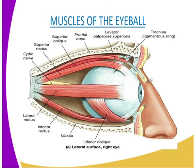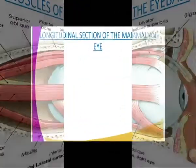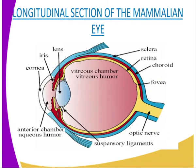The mammalian eye is a spherical fluid-filled structure whose wall consists of three distinct layers. The outer layer is known as the sclera. The middle layer is made up of the choroid. The inner layer is made up of the retina.